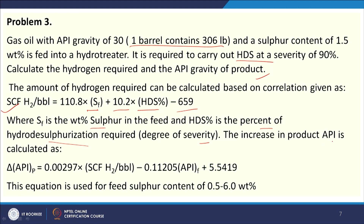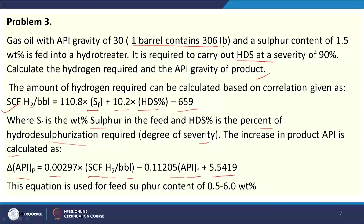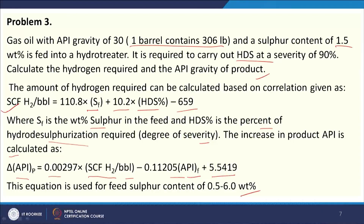The hydrogen required can be calculated by the correlation: SCF H₂ per barrel = 110.8 × SF + 10.2 × HDS(%) − 659, where SF is the sulfur weight percent of the feed and HDS is the percent of hydrodesulfurization required. The increase in product API is: ΔAPI_P = 0.00297 × SCF H₂/barrel − 0.11205 × API_feed + 5.5419. This equation applies for feed sulfur content of 0 to 6.0 weight percent.